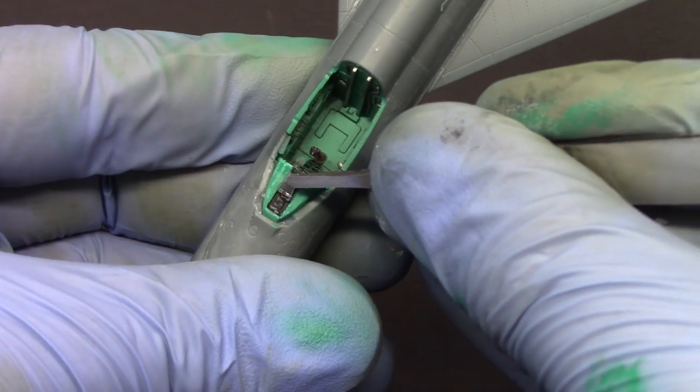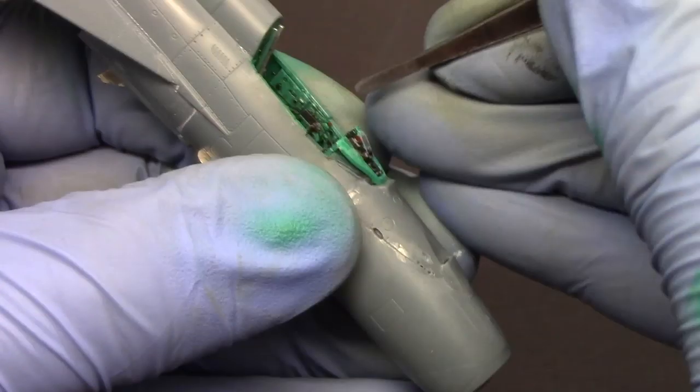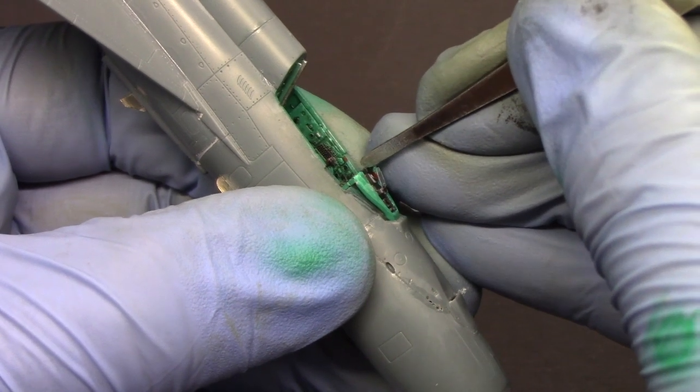Finally I can attach the screen. Here I use CA glue but PVA glue is also a good option.